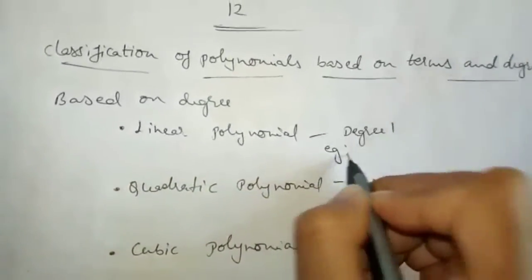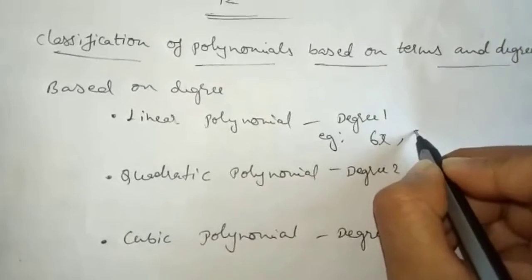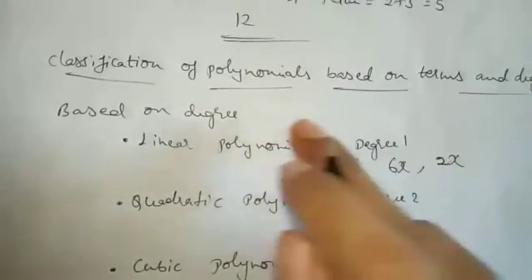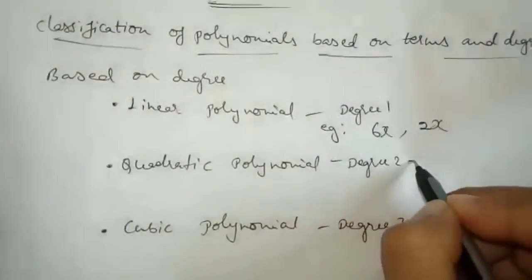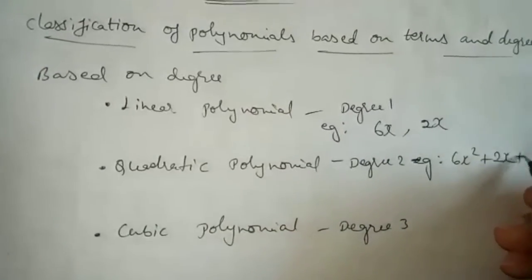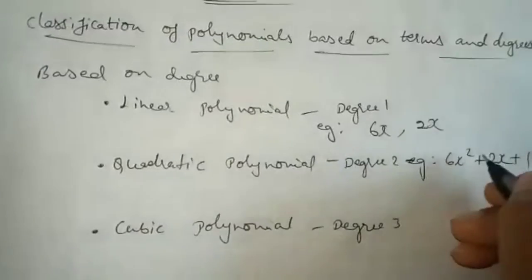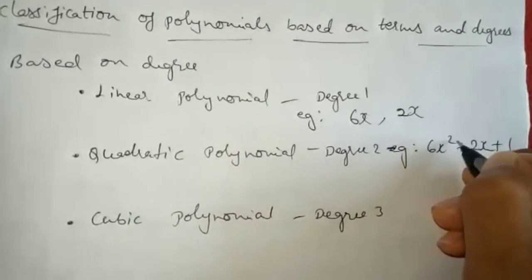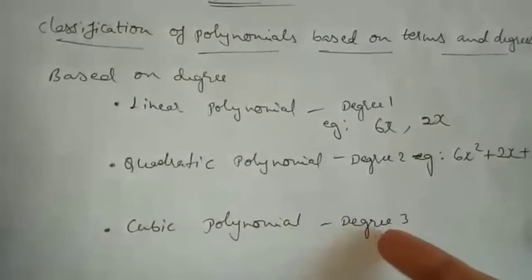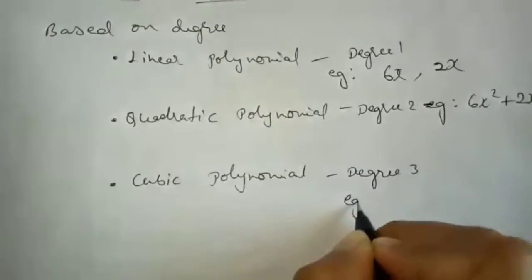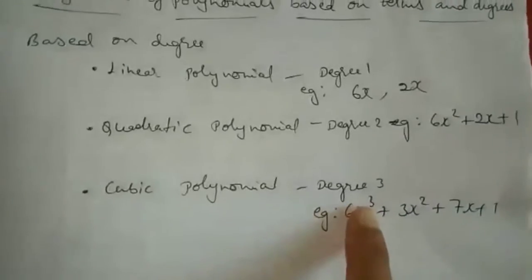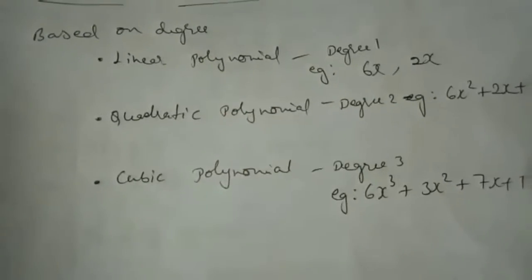For example, 6x or 2x are degree one, so these are linear polynomials. Quadratic means degree two — for example, 6x² plus 2x plus 1. The highest degree here is two, so this is called a quadratic polynomial. Similarly, for degree three — for example, 6x³ plus 3x² plus 7x plus 1 — the degree is three, so this is a cubic polynomial.